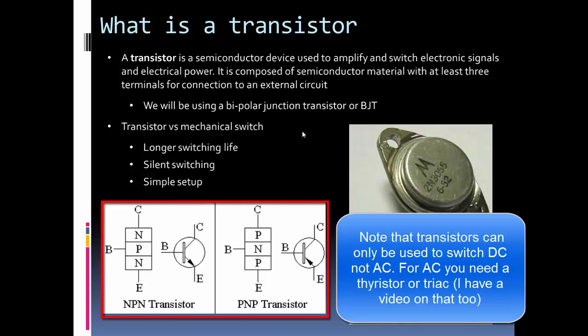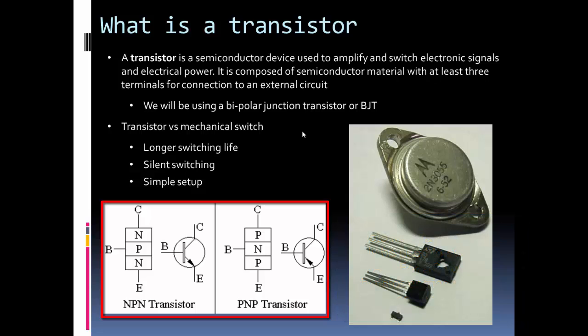On the bottom there you can see some examples of BJTs. So the two flavors are NPN and PNP. That just has to do with the material. So you have a negative doped material, a positive doped material, and a negative doped material for an NPN transistor. And then for a PNP it's the opposite. You can see they're denoted by the arrows here at the emitter.